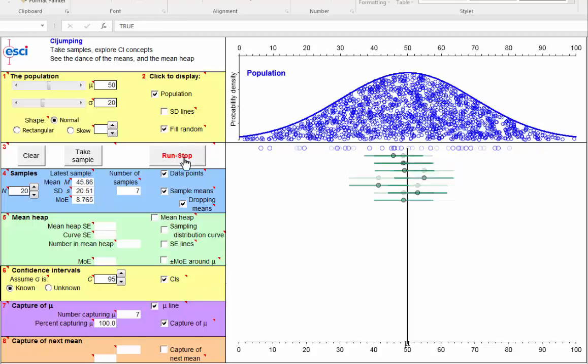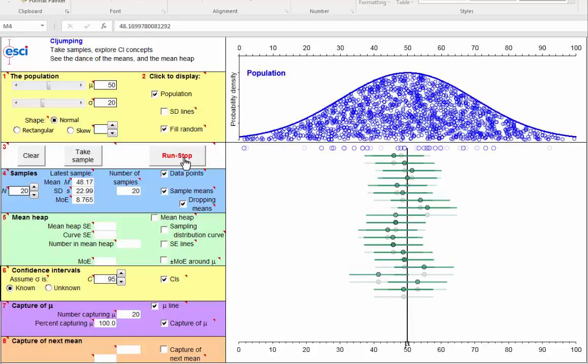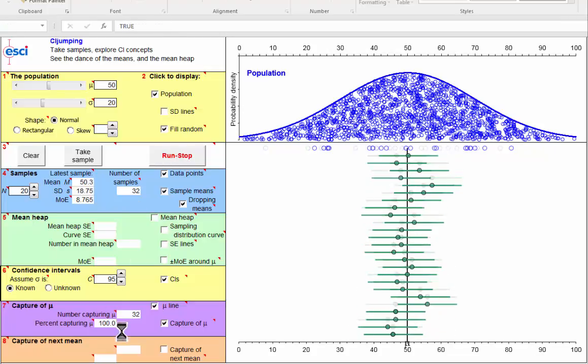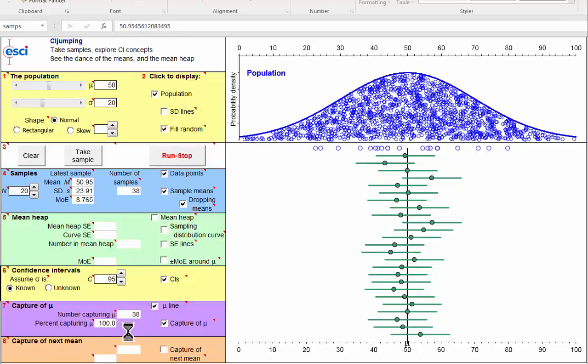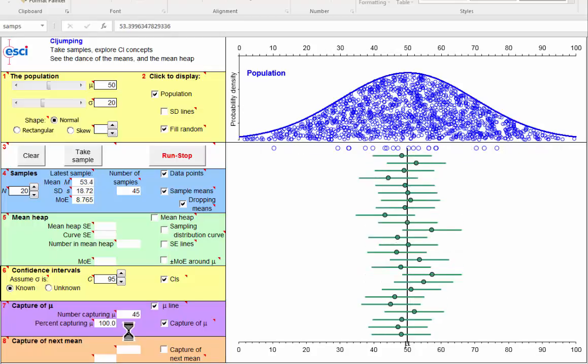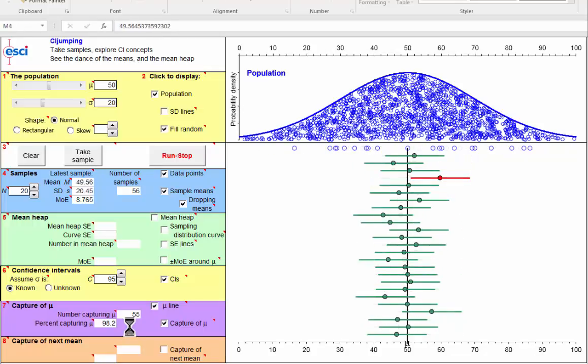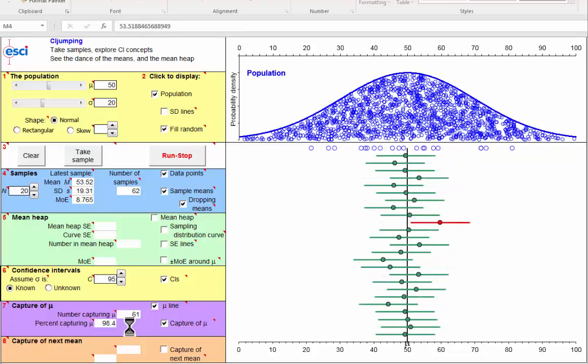I've gone back to n equals 20, and I'm now looking at the dance of the confidence intervals there for n equals 20. Oh, 100% capturing so far. That can't be random, really. Oh, well, run it for long enough, and it will be short term lumps, long term, absolutely predictable.